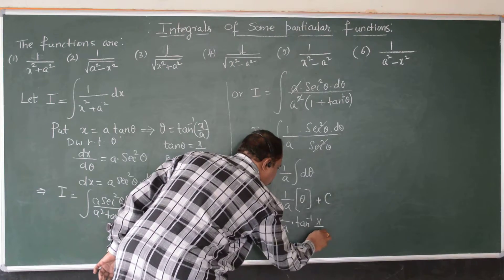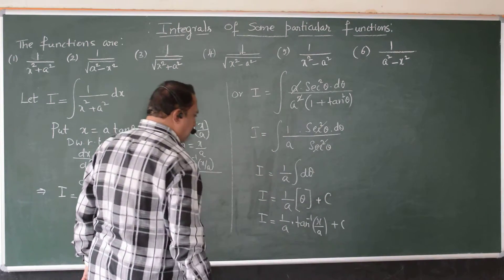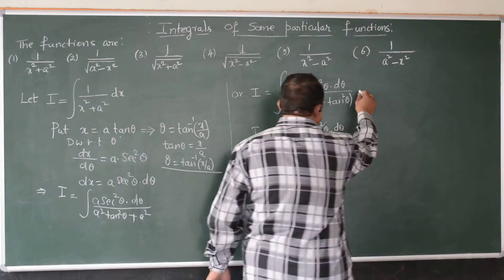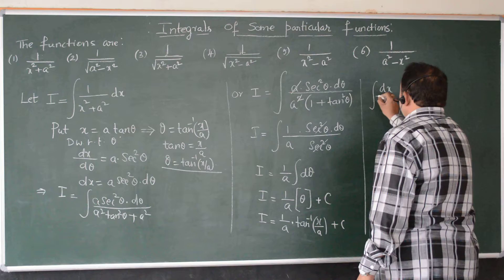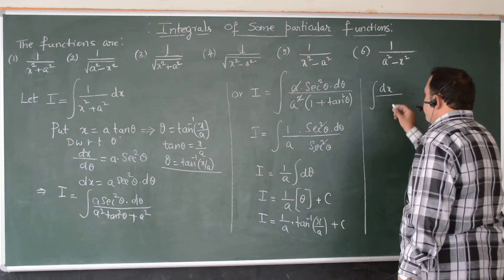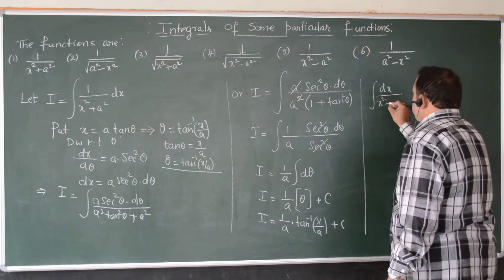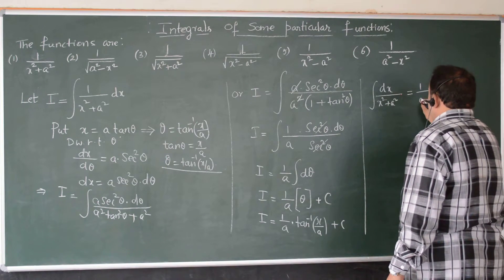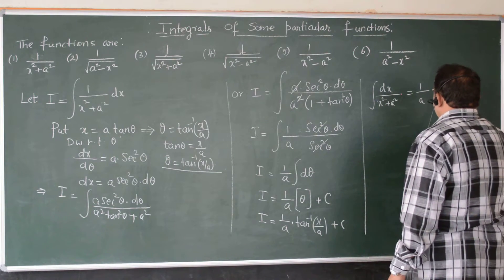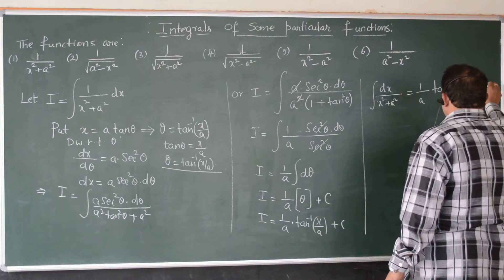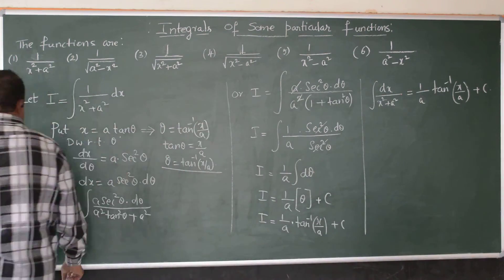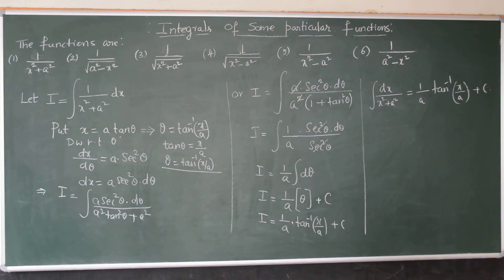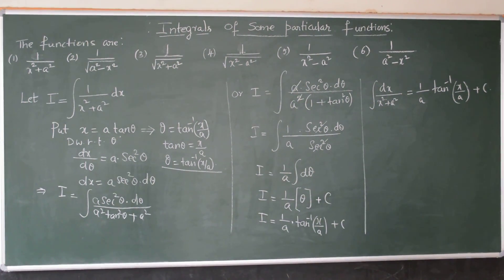Now substituting back, theta equals tan inverse of x by a. So I equals 1 by a times tan inverse of x by a plus c. Therefore the final result is: the integral of dx by x square plus a square equals 1 by a tan inverse of x by a plus c.